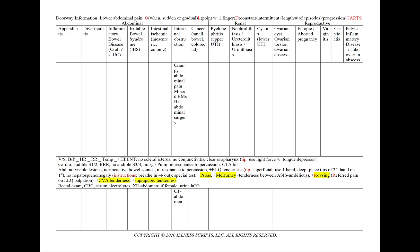In an intestinal obstruction, we'll see crampy abdominal pain with a history of missed bowel movements or prior abdominal surgeries, and we'll include a CT of the abdomen. In cancer — either small bowel or colorectal — we can see crampy abdominal pain, constipation, and hematochezia. Classically for cancer, we'll see weight loss or decreased appetite, and our patient will be greater than 50 years old. We'll add a CT abdomen, colonoscopy, and PT and PTT for any blood in the stools.